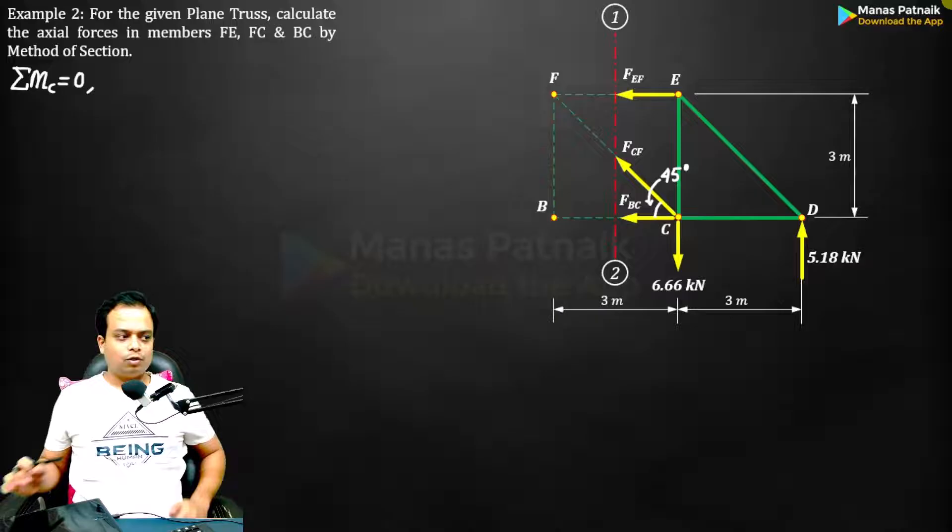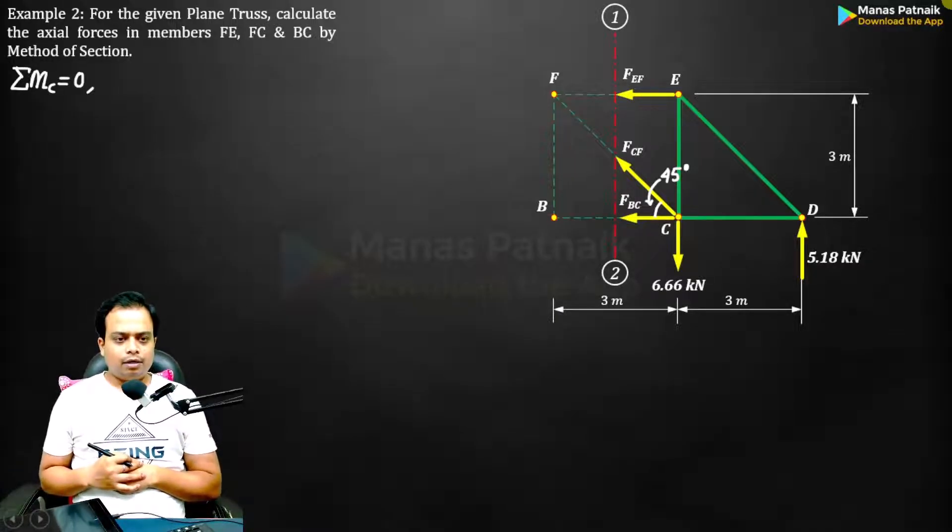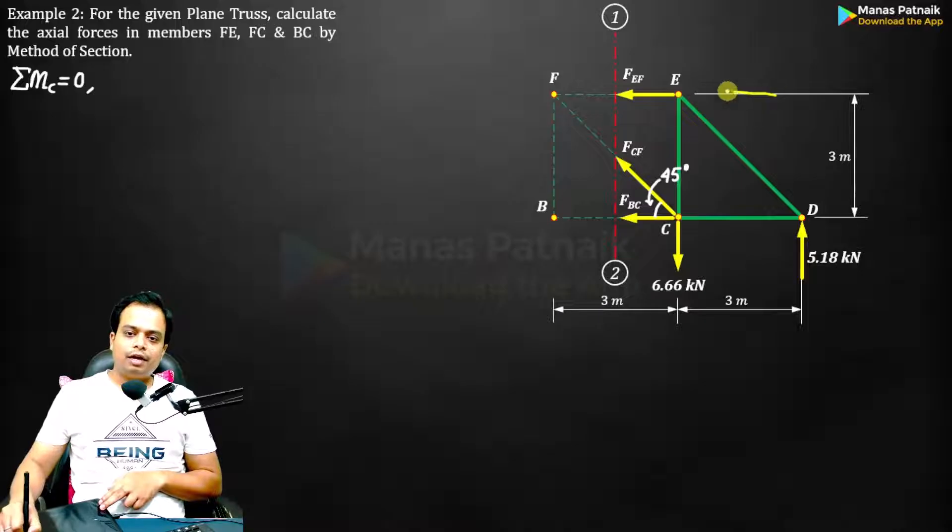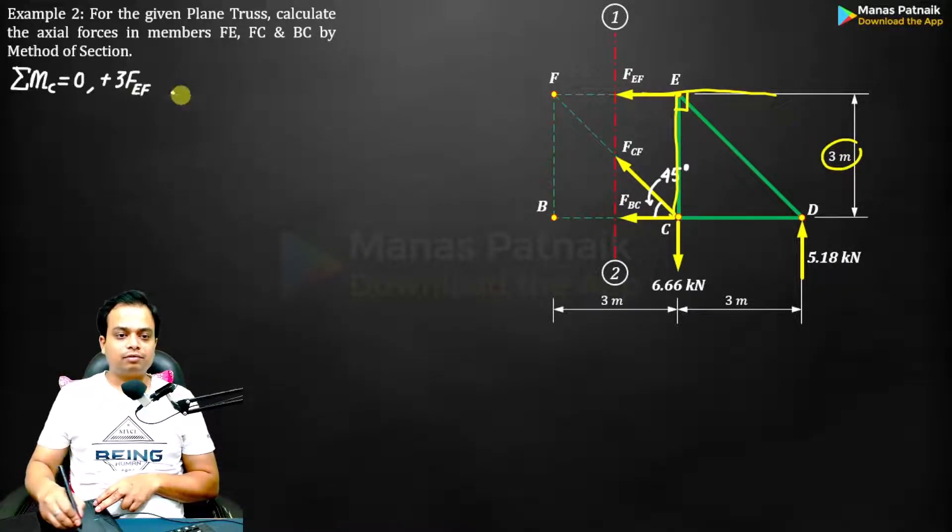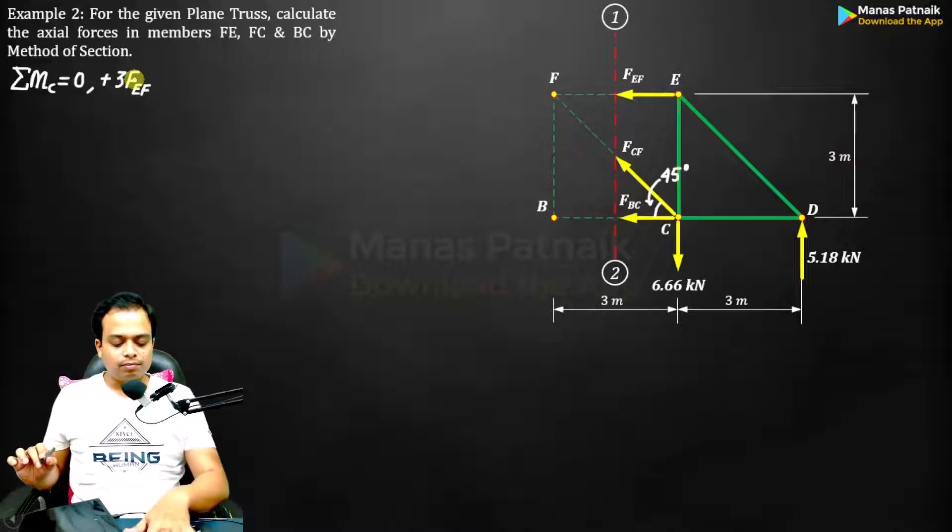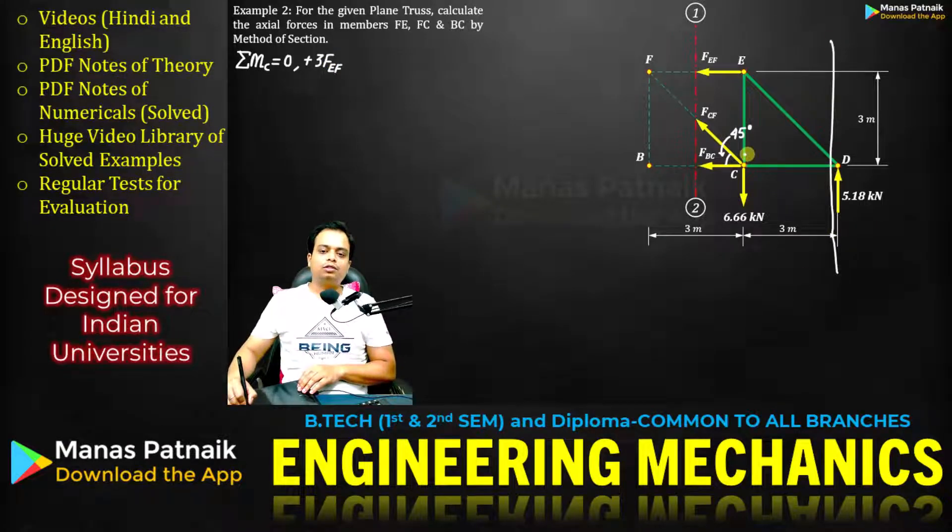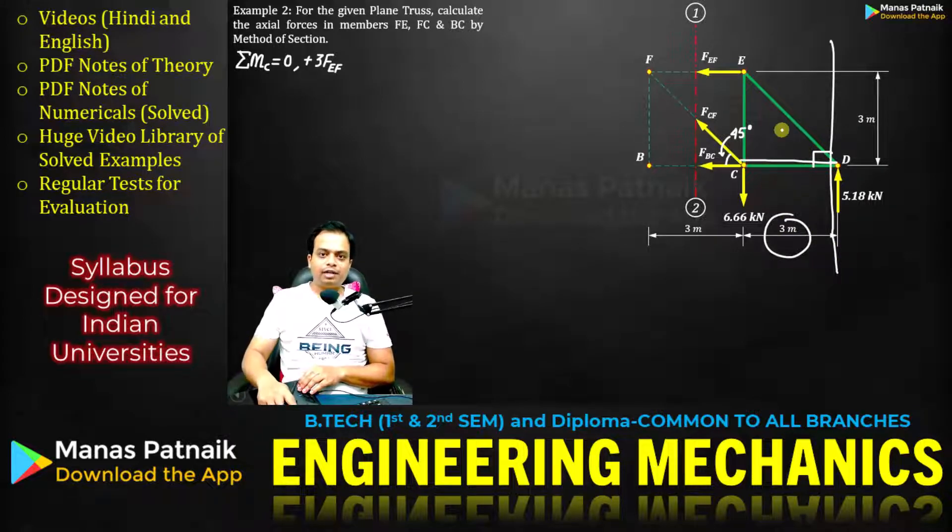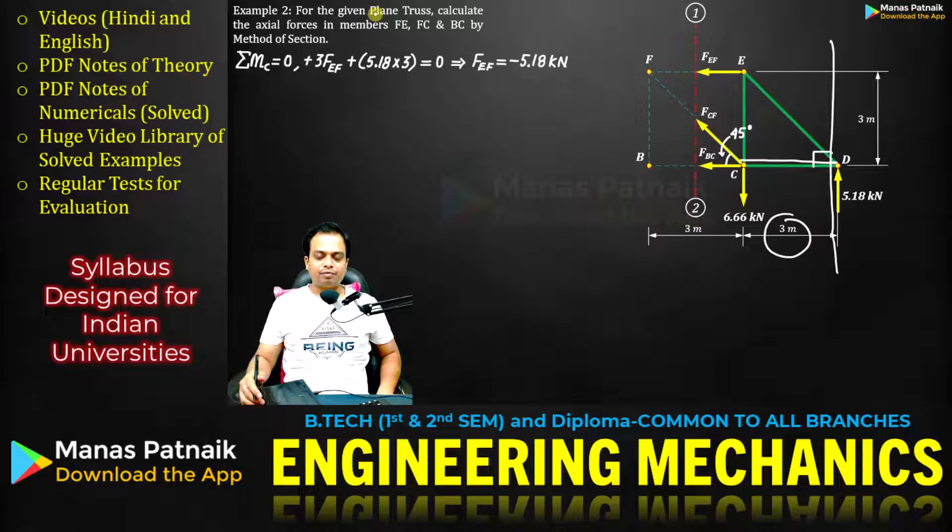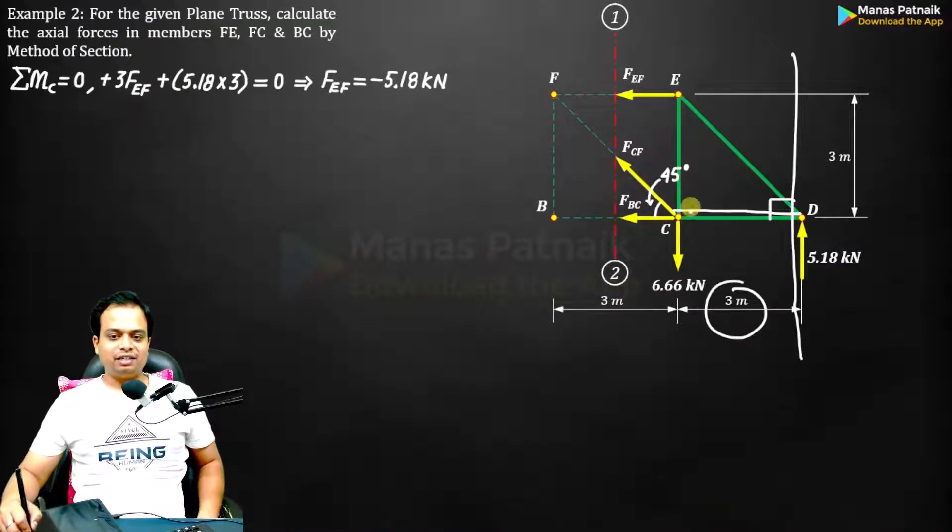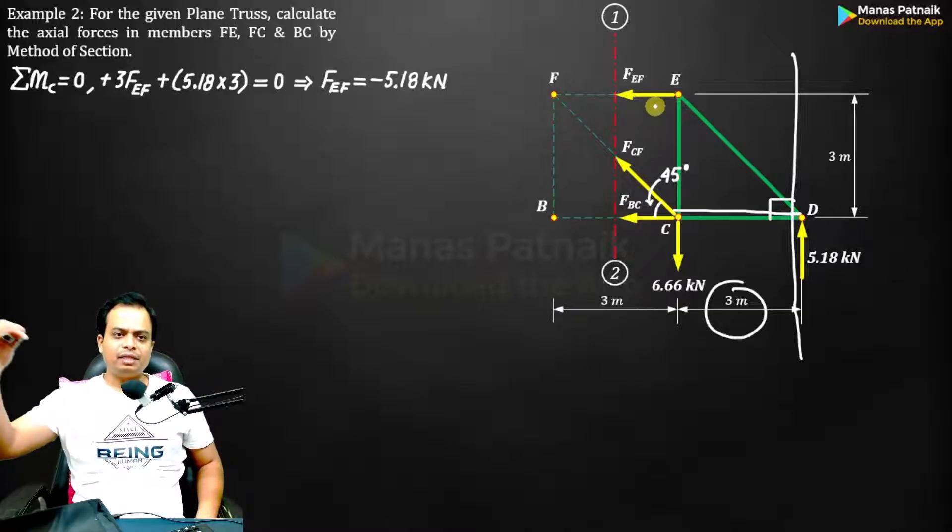Watch. FEF multiplied by perpendicular drop from C, that is 3. Three times FEF anticlockwise positive. 5.18 force perpendicular drop 3. 5.18 multiplied by 3 anticlockwise positive. Solve for FEF. What you get is 5.18 but negative, which indicates that this member EF will be under compression. I will prepare the chart at the end.